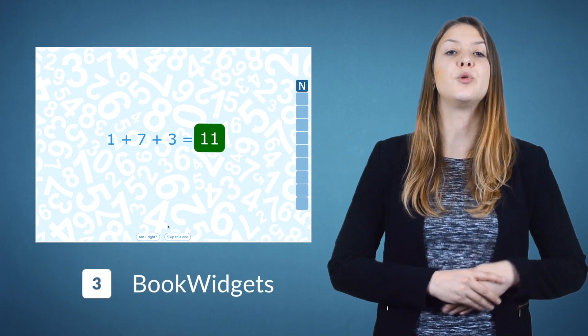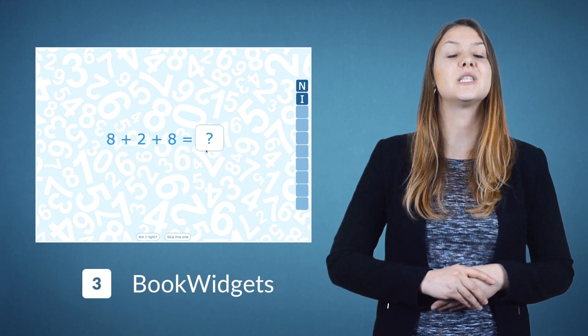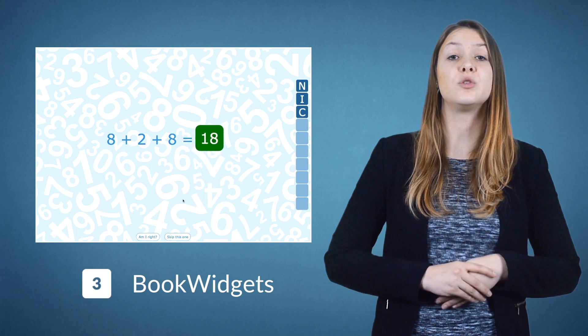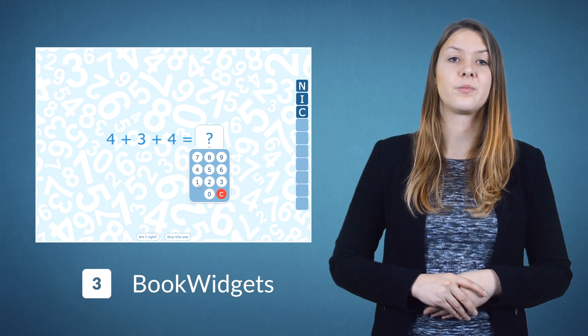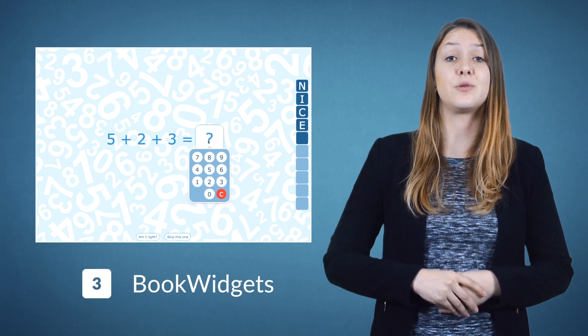You can also use BookWidgets for teaching math. The youngest math pupils start by learning simple additions and subtractions, then move on to multiplication and division. The arithmetic widget lets them solve simple arithmetic problems adapted to their level.